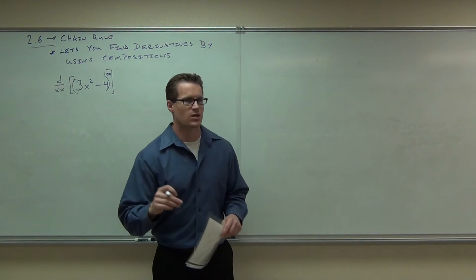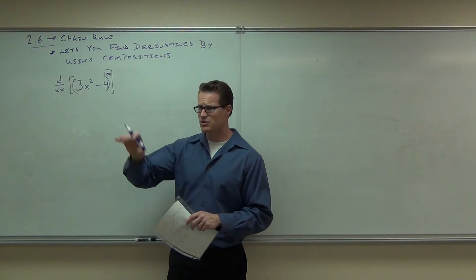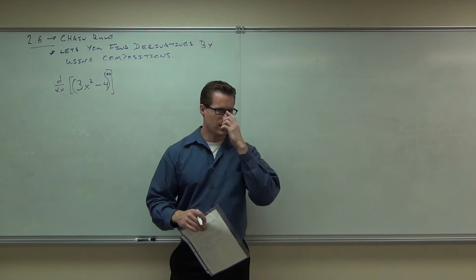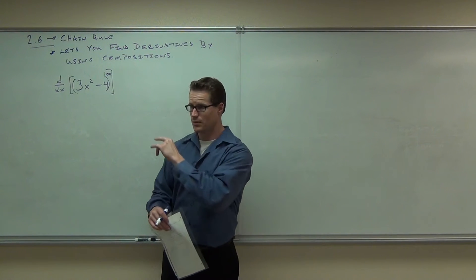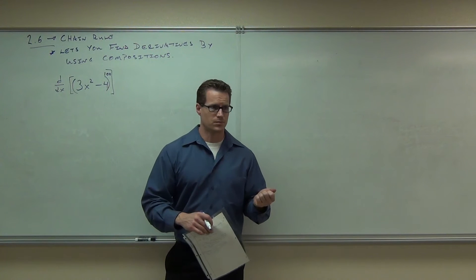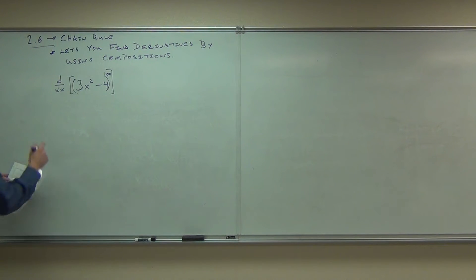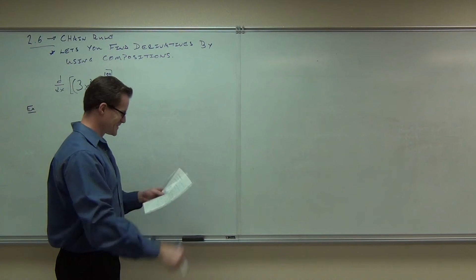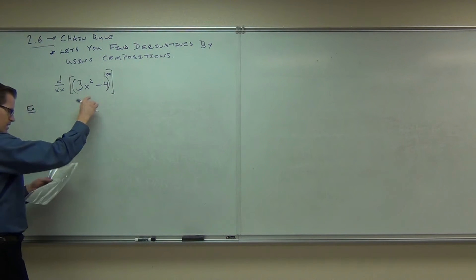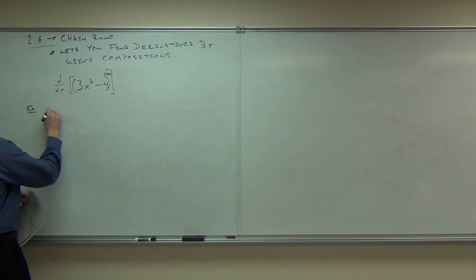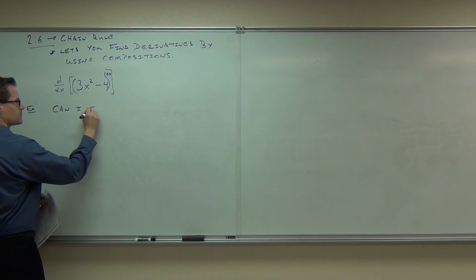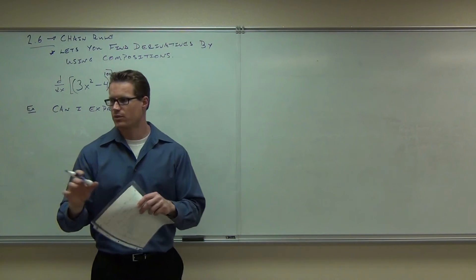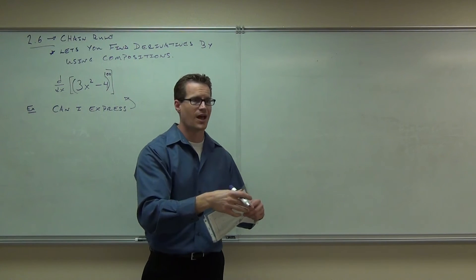All the times where you had to distribute - like when you had the squared, you had to distribute that - in the first set of homework you're like, oh man, this is tedious. Well, the chain rule takes care of that. So anytime you can see a composition, you can use the chain rule. That's why I had you cover compositions and go with the reverse of compositions, looking for a function within a function. So we get to this point and kind of understand that idea now.